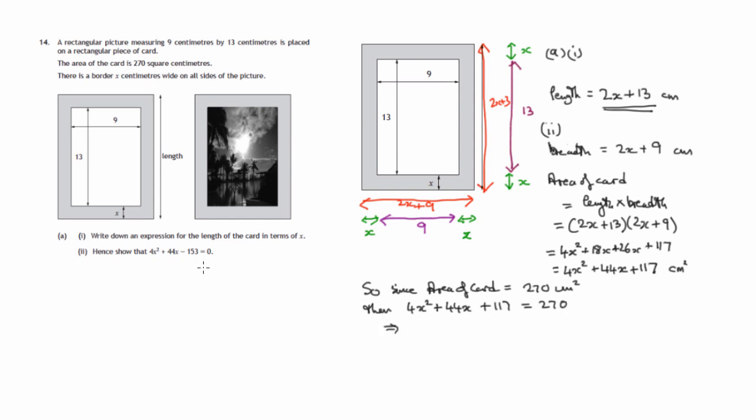And I think to get it in the form that we're after, we want 0 on the right-hand side, so we'd take 270 away from both sides. Now, 117 minus 270 will give us minus 153. So that's the equation that we were asked to find, the quadratic equation.